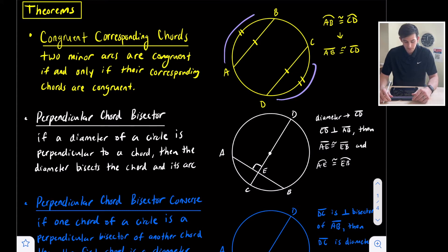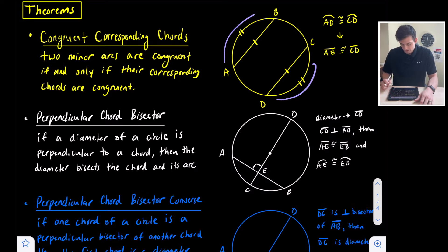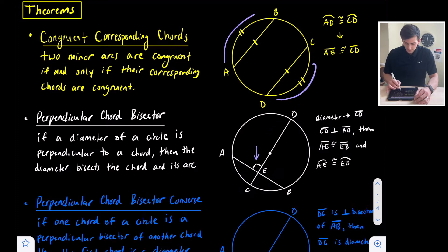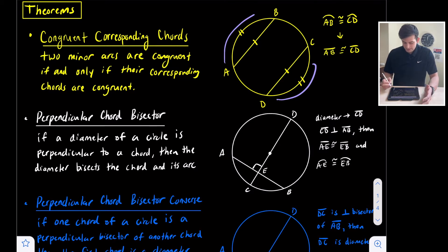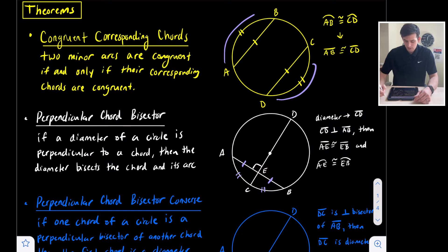The next theorem is the Perpendicular Chord Bisector Theorem. It states that if a diameter of a circle is perpendicular to a chord, then the diameter bisects the chord and its arc. In the diagram, diameter CD is perpendicular to chord AB, shown by the right angle box. This tells us that AE is congruent to EB — that's where bisect comes in — and it also bisects the arcs.